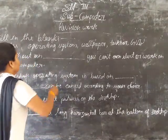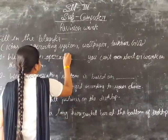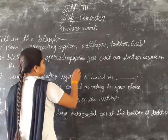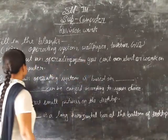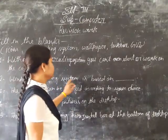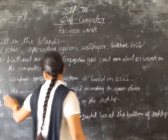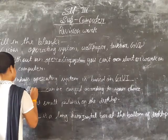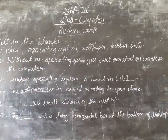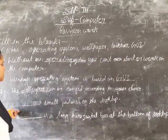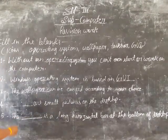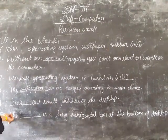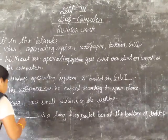So first, without an operating system, you can't even start work on the computer. Second, Windows operating system is based on GUI. And third, the blank can be changed according to your choice. And fourth, blank are smart features on the desktop. And fifth, the blank is a long horizontal bar at the bottom of the desktop — this is called the task bar.